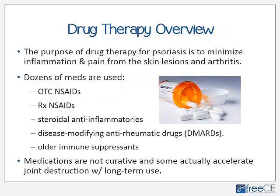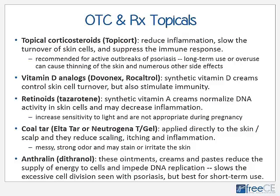The main purpose of drug therapy for psoriasis is to minimize inflammation and pain from both skin lesions and arthritis, if present. There are a number of medications used both topically and systemically, including over-the-counter and prescription NSAIDs, steroidal anti-inflammatories, disease-modifying anti-rheumatic drugs (DMARDs), and older immune suppressants like cyclosporine. Medications are not curative — they simply deal with the symptoms, and some actually accelerate joint destruction with long-term use.